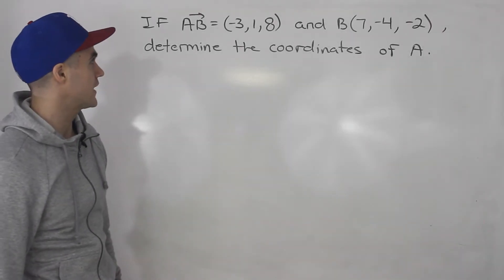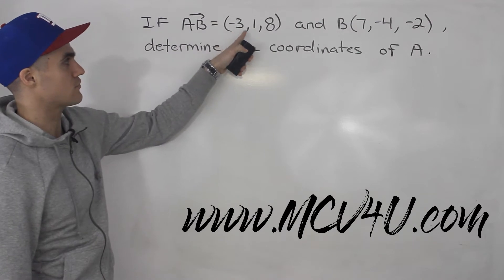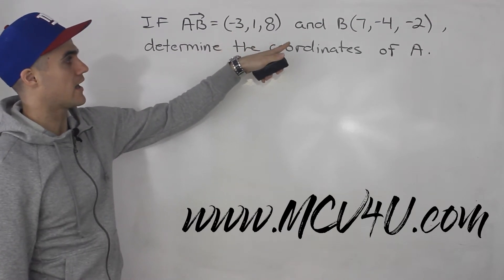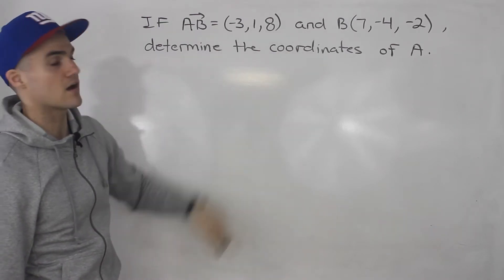Welcome back, everybody. Moving on to another question. If vector AB is equal to (-3, 1, 8), and point B is (7, -4, -2), we have to determine the coordinates of A.